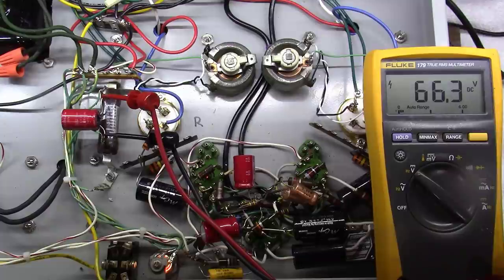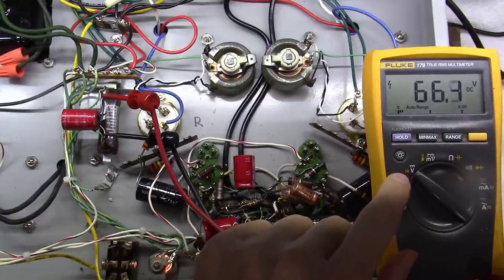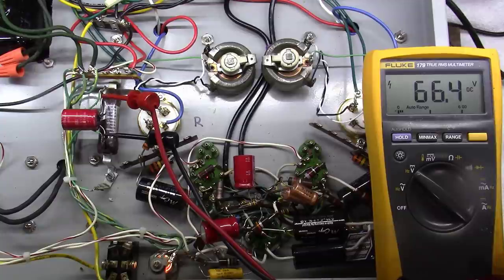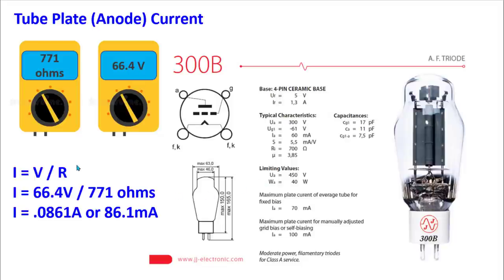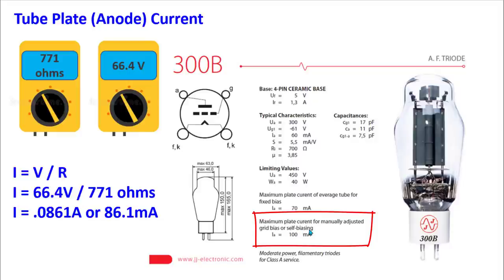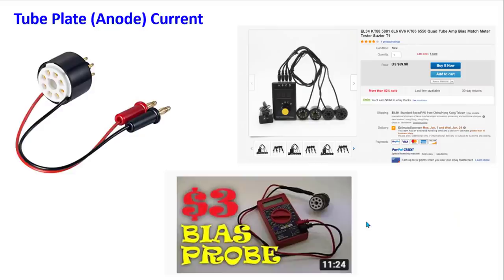After letting the amplifier warm up on a variac for several minutes, I flip my meter over to volts and measure across the cathode resistor — reading 66.4 volts DC. Using our measured values of 771 ohms and 66.4 volts, we calculate 0.0861 amps, or 86.1 milliamps. Looking at a 300B data sheet, the maximum plate current for self-biasing — which is what we're running — allows up to 100 milliamps. At 86 milliamps we're well within spec, and you can experiment with plate current to tune how the amplifier sounds.